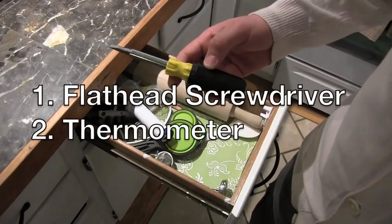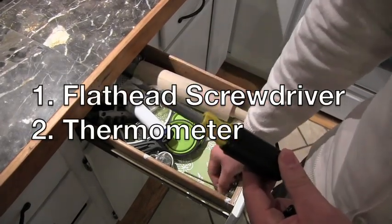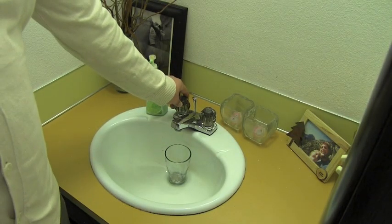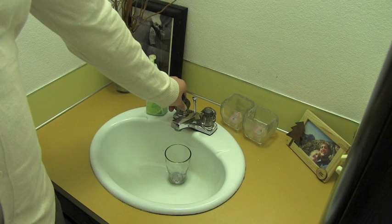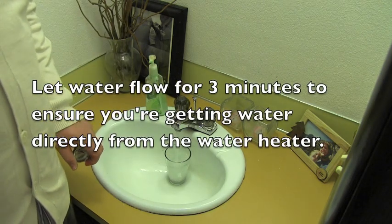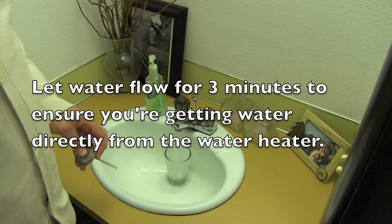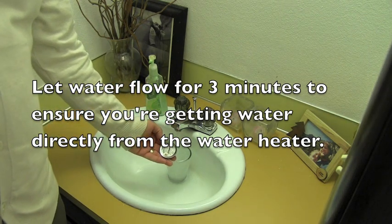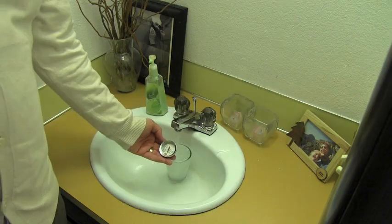A flathead screwdriver and a regular home thermometer. To test the water heater's current temperature, turn on the hot water tap closest to the water heater. Let it run for about 3 minutes to ensure you're getting water from the tank. Then, insert your thermometer and take a reading of your current hot water temperature.